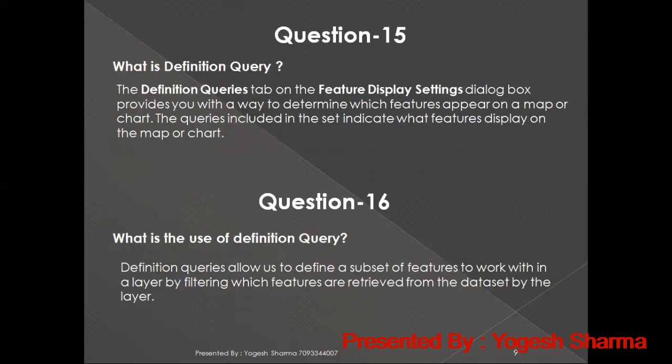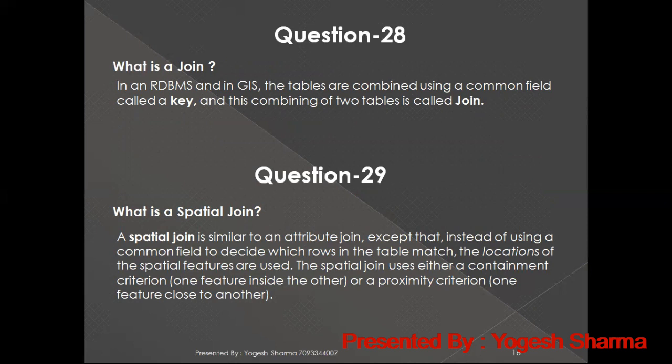What is the definition query? The definition query tab on the feature display settings dialog box provides a way to determine which features appear on the map or chart. Basically, we can control the display of features. Using a definition query we can also define what is called a join. What is a spatial join? A spatial join is the same as a regular join, but instead of joining based on a non-spatial field, it is based on a spatial constraint — either a containment criteria or a proximity criterion.